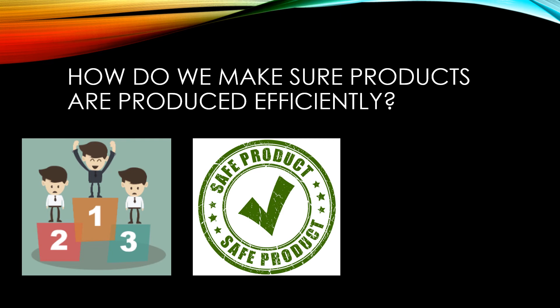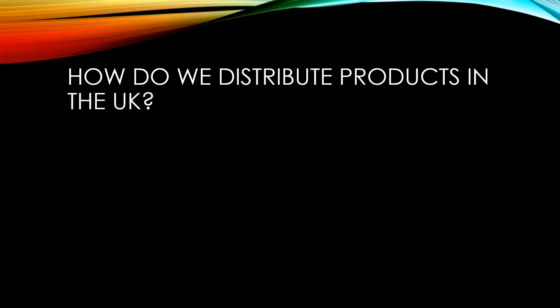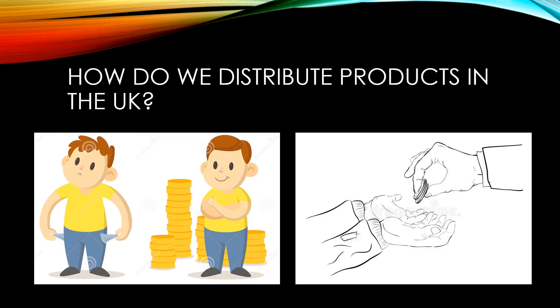They also write and enforce health and safety regulations to ensure that workers are safe during the production process. The main method for distributing products in the UK could be described as 'user pays' — that is, the goods and services go to those people who can afford them. However, the government operates a system of taxes and benefits that helps to redistribute some wealth to those that are most needy. In addition, they ensure free access to things like healthcare and schools.